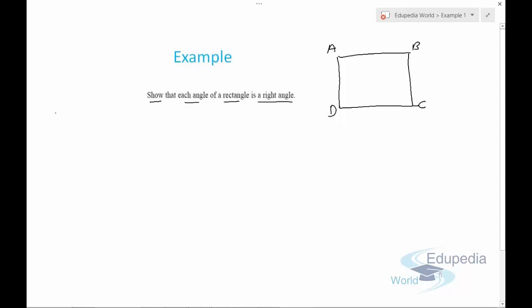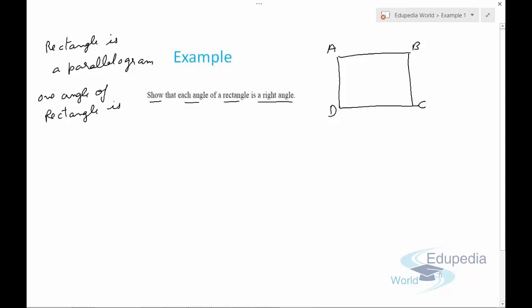Now, a rectangle is a parallelogram. If we discuss the properties of a rectangle, we can say that one angle of the rectangle is 90 degrees. So let's assume angle D equals 90 degrees — this angle is 90 degrees.